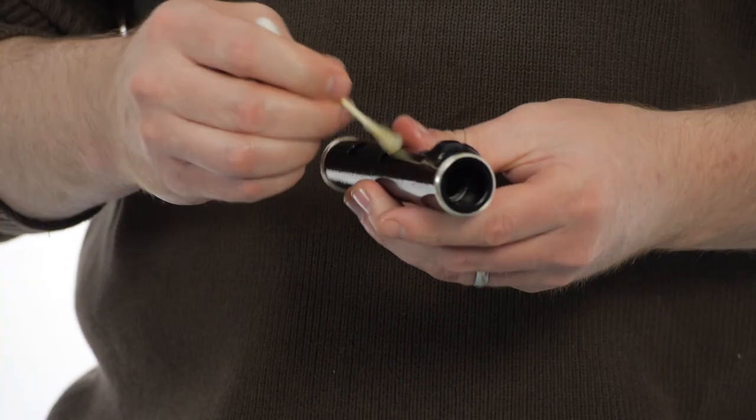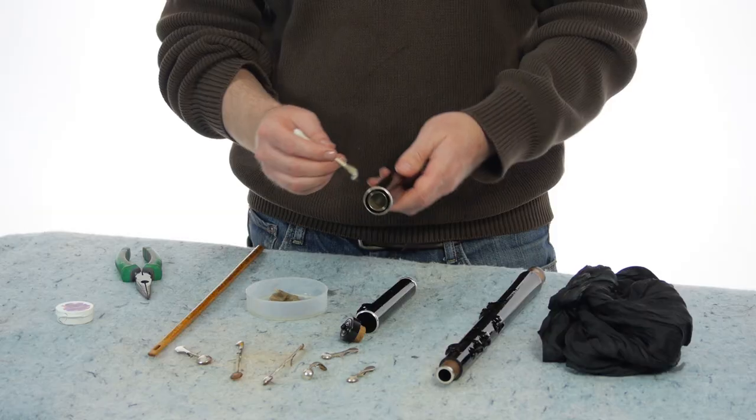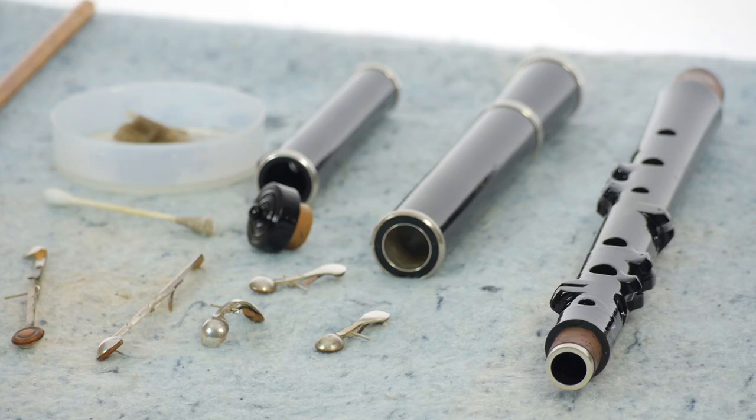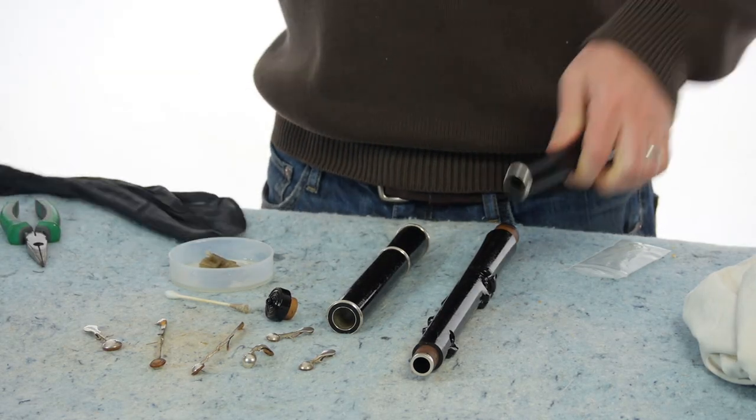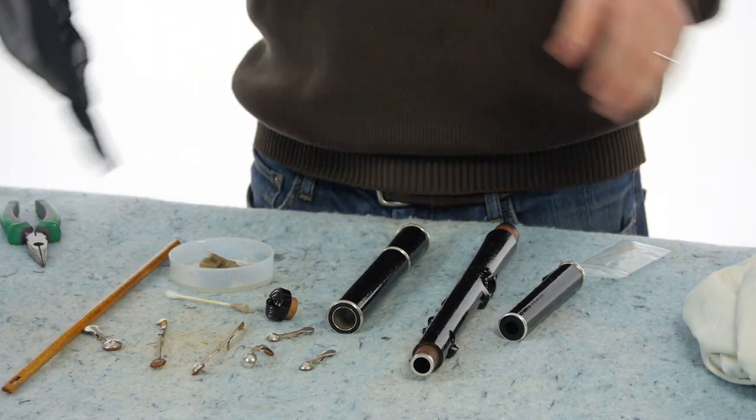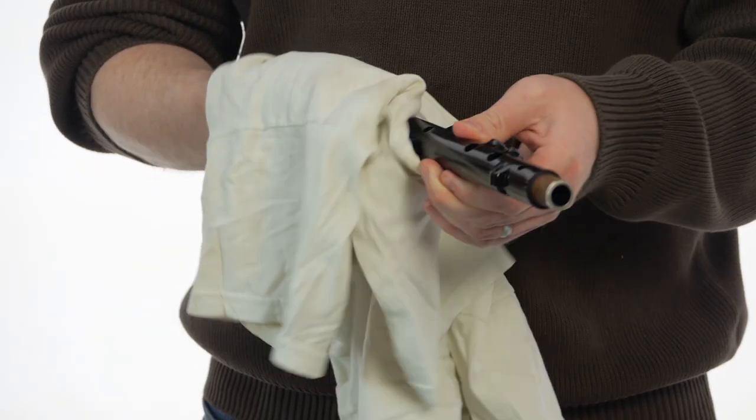Cotton swabs are handy for applying oil to the tone holes and embouchure. If you have time, let the flute absorb the oil for a few hours before removing the excess. I like to use my silk swab to clear the excess oil from the bore. The oil left on the swab aids in conditioning the bore during future swabbings.